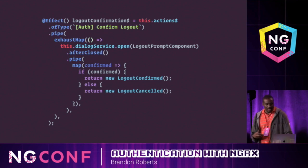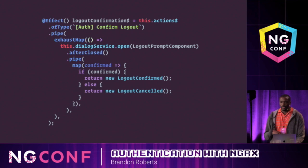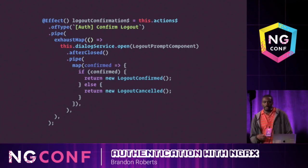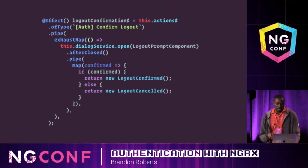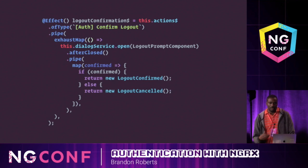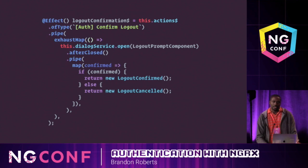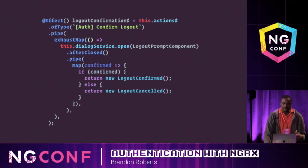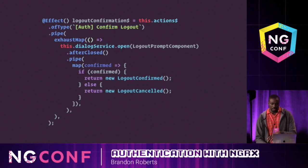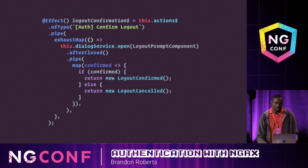Another question is how to handle dialogs. When users click a logout button, you don't immediately log them out — you want to confirm their intent first. Here we use an effect to prompt the user to confirm logging out using the Angular Material dialog service. Based on the user's feedback, if they confirm that action, we map it to a new action and start a new state transition to log out the user. If they cancel or dismiss the prompt, we consider it an empty side effect.